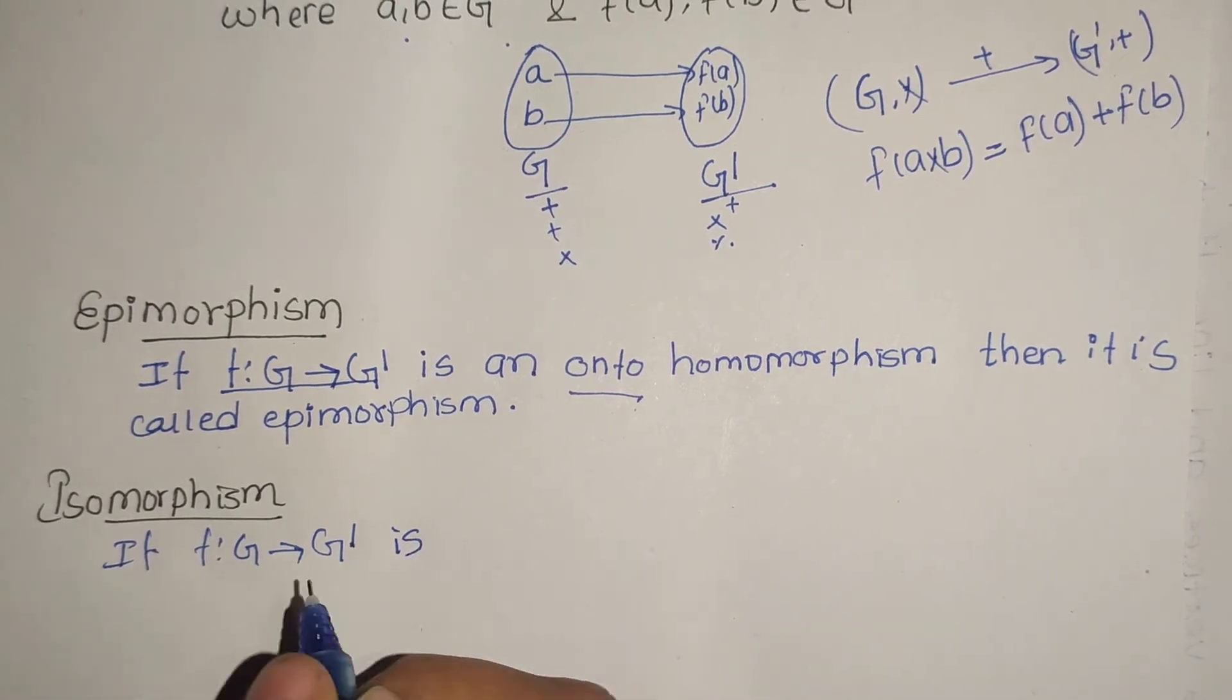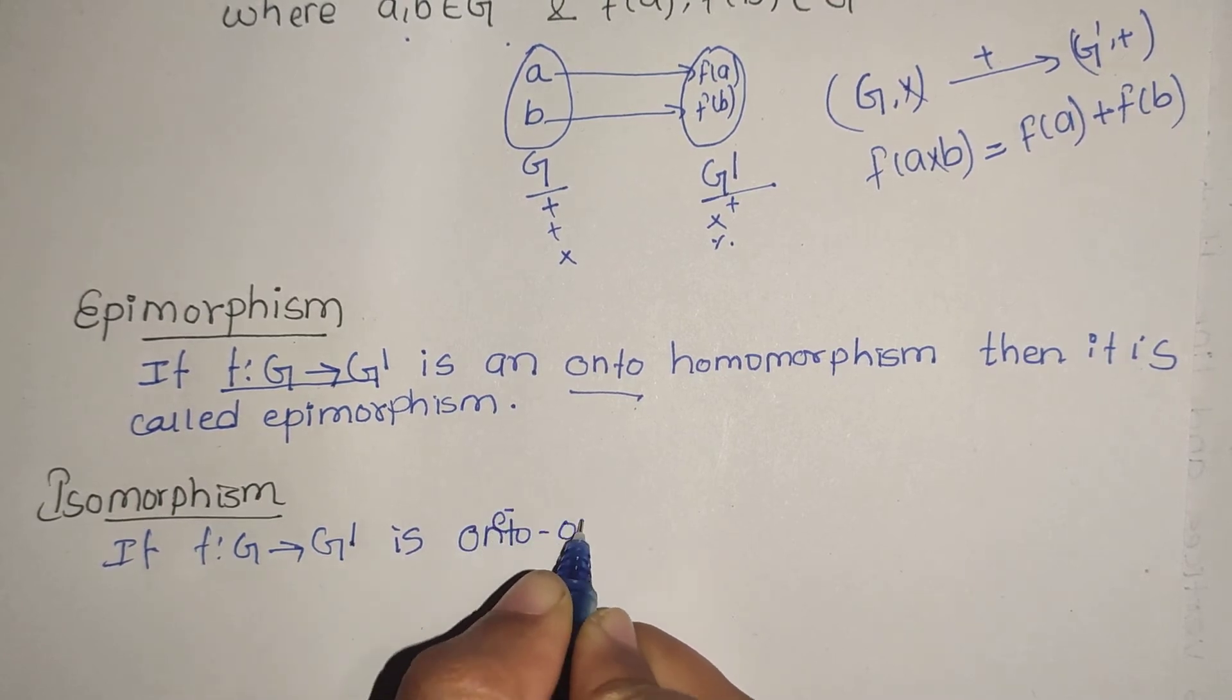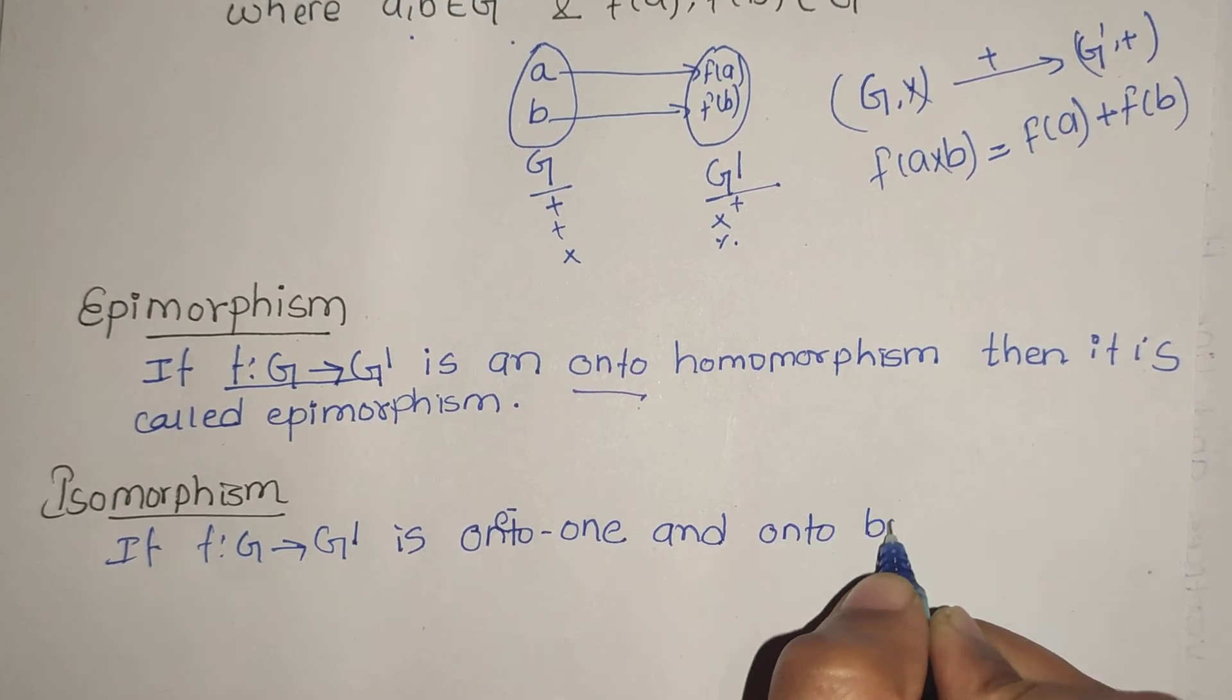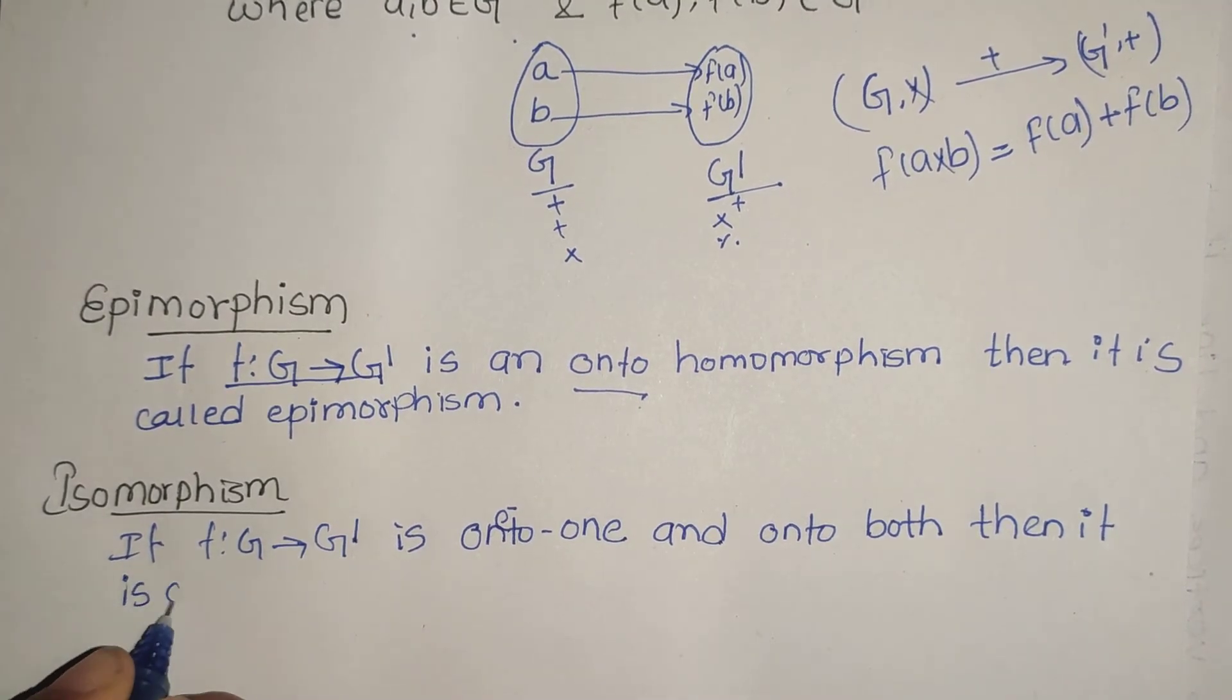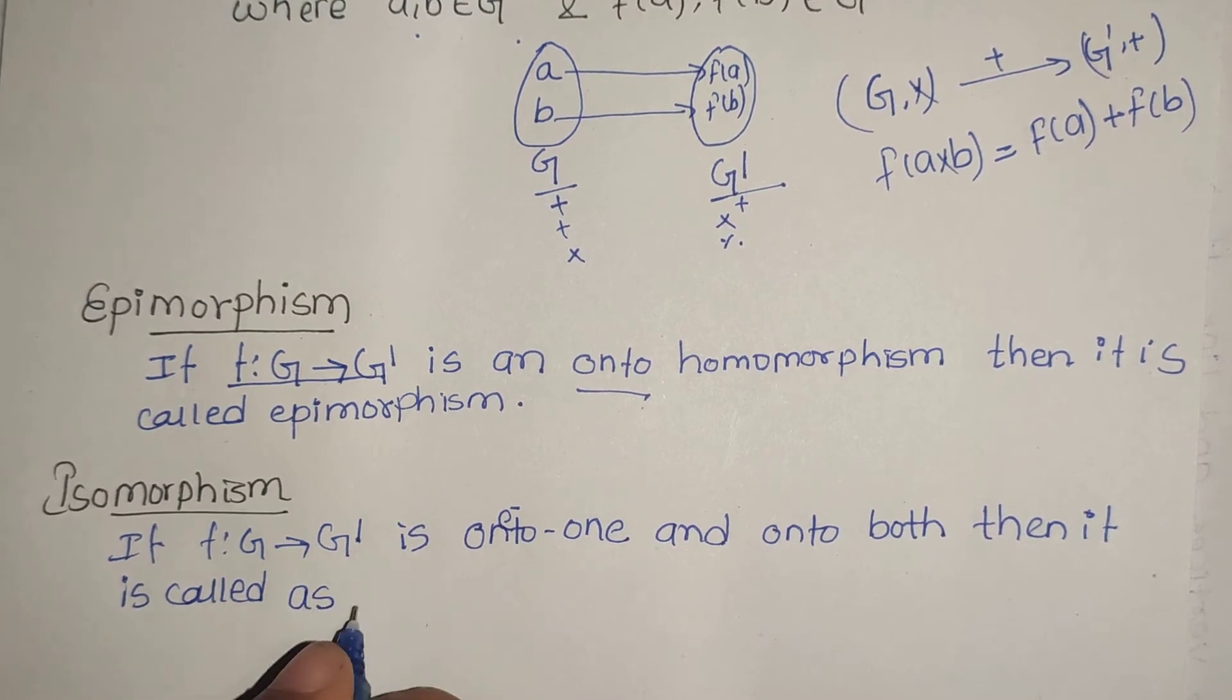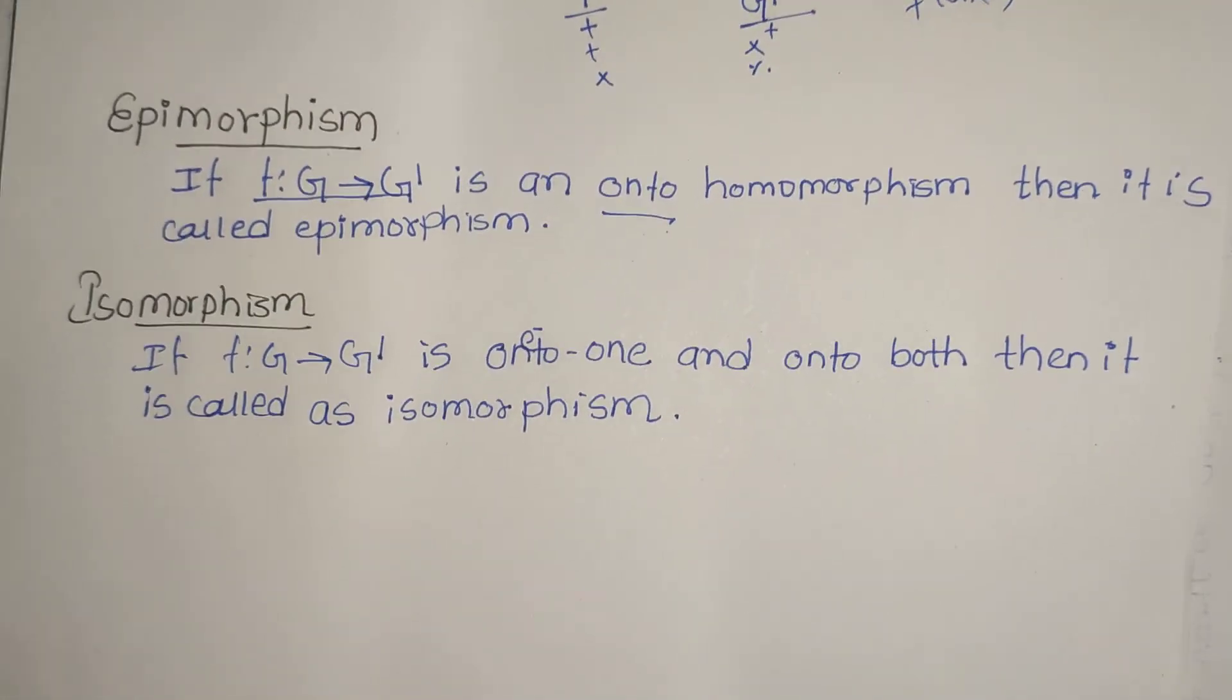If the mapping f: G → G' is one-to-one and onto both, then it is called isomorphism.